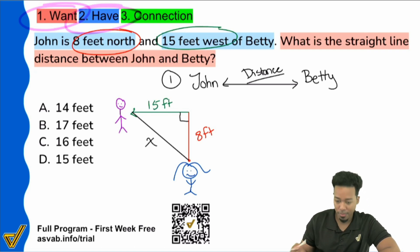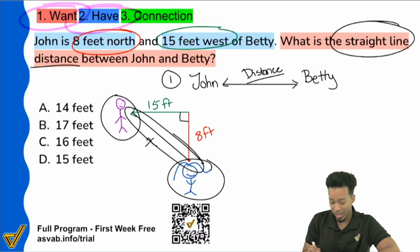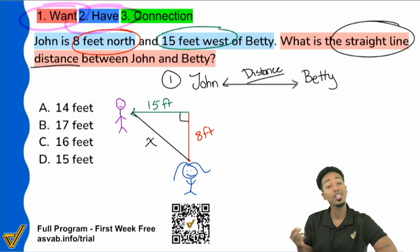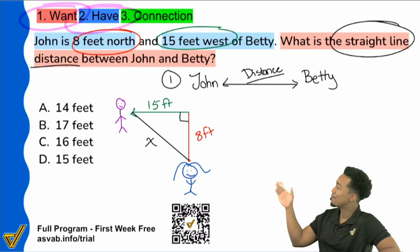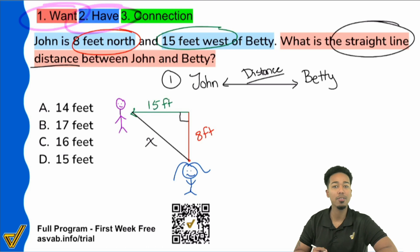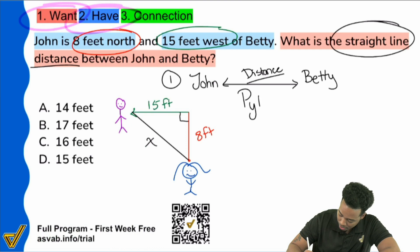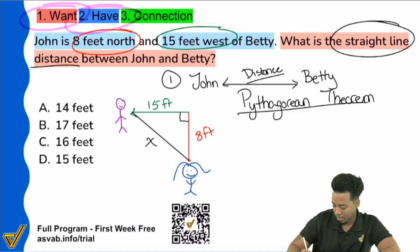So we're looking for that. The straight line distance. What is the straight line distance between them? Here's Betty, here's John. That's the straight line distance. So that's what we're looking for, my party people. And we see that if we plug in the information, we have created a right triangle. And that's where the Pythagorean theorem applies. So write that down for yourself on the side. We have the Pythagorean theorem. And remember, the Pythagorean theorem states that if you have a right triangle, a squared plus b squared equals c squared.